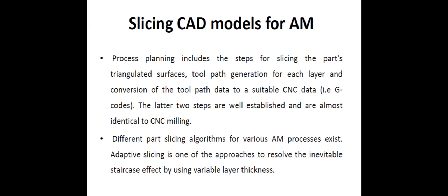Now let us see what is slicing CAD models for additive manufacturing. Process planning includes the steps for slicing the parts' triangulated surface, tool path generation for each layer, and conversion of the tool path data to suitable CNC data, i.e. G codes. The latter two steps are well established and are almost identical to CNC milling. Different part slicing algorithms for various additive manufacturing processes exist.